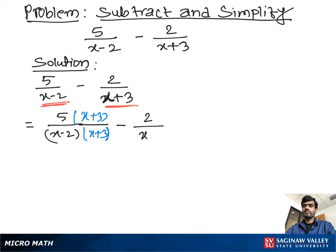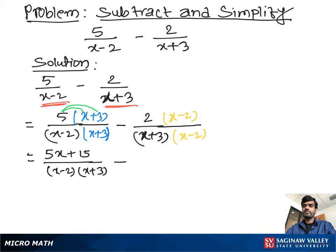Now we use the distributive property. We multiply 5 times x, which is 5x, plus 5 times 3, which is 15, over x minus 2 times x plus 3. Same way, we solve for the second term using the distributive property: 2 times x is 2x minus 2 times 2 is 4, over x plus 3 times x minus 2.